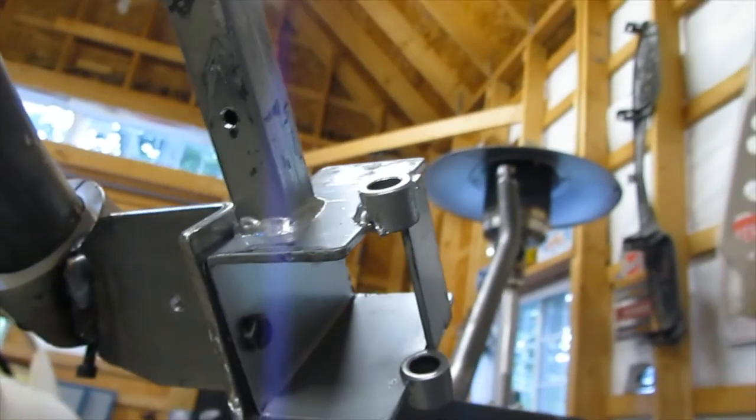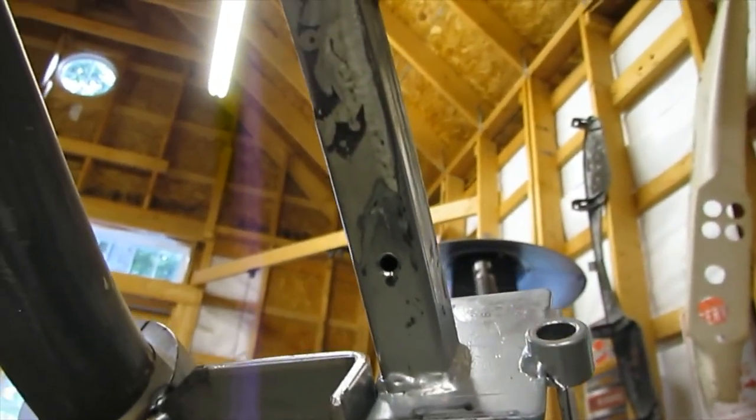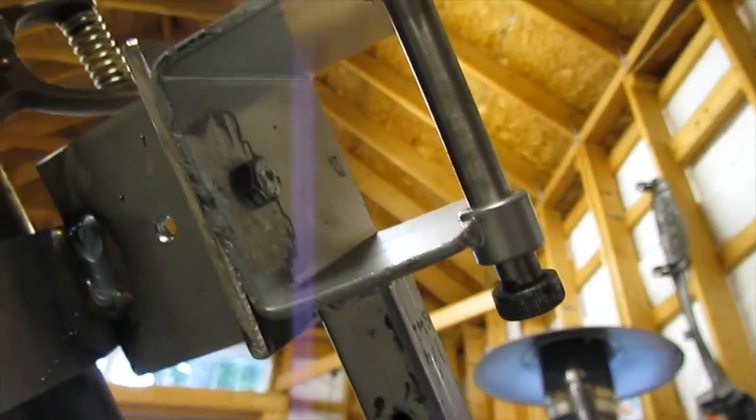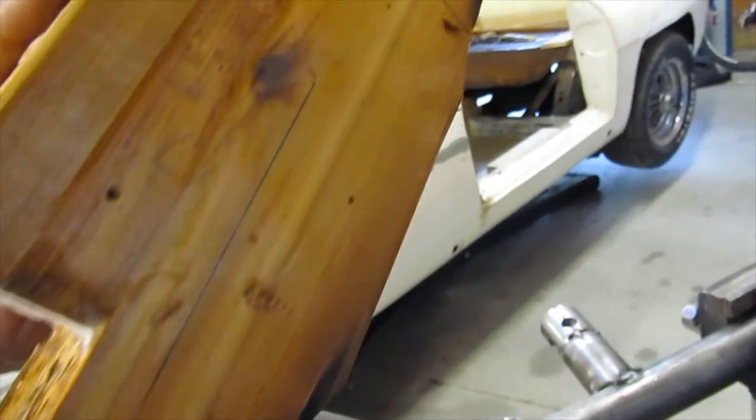and then bolted to the hinge pocket itself to make a nice rigid connection there. And then these are the wooden spacers. Of course, you can see they got a little charred there because I welded when it was on the car to get the position exactly right.